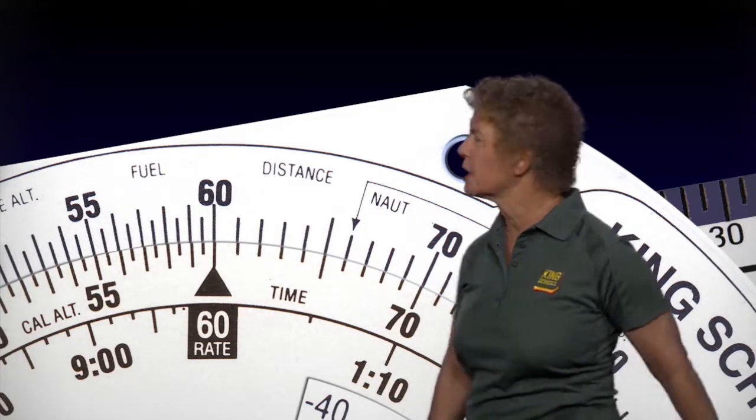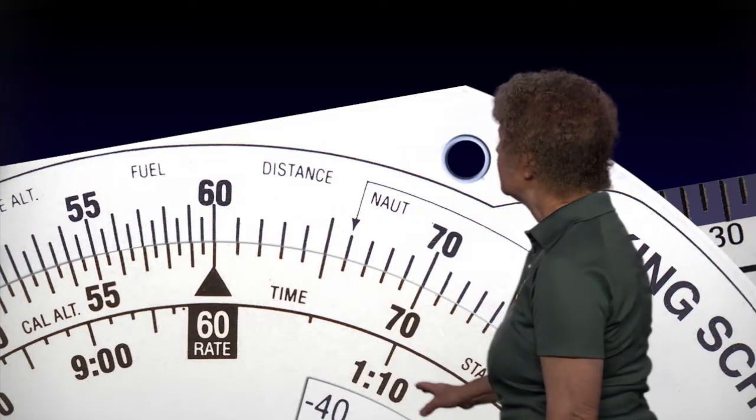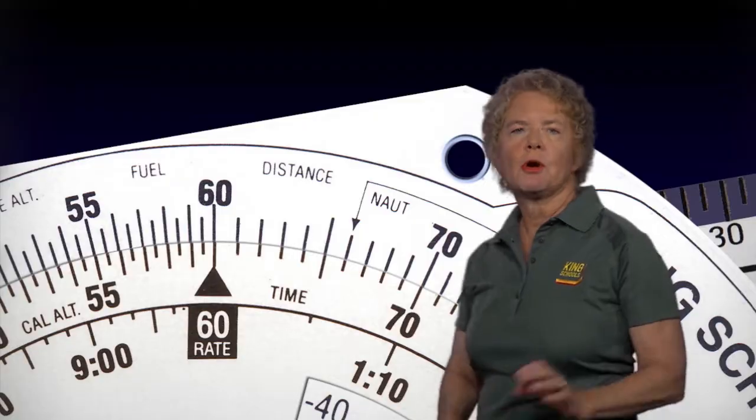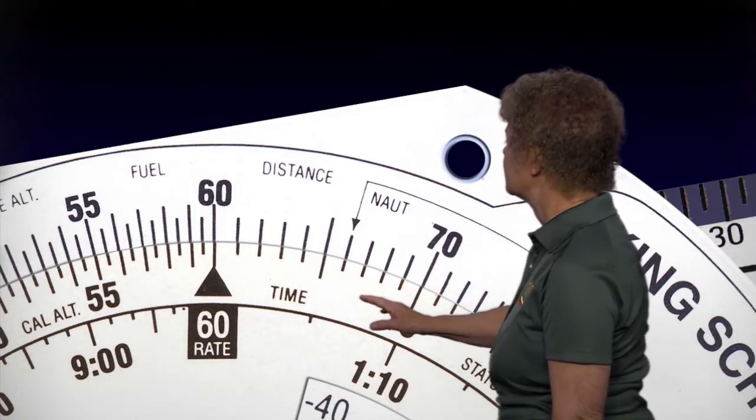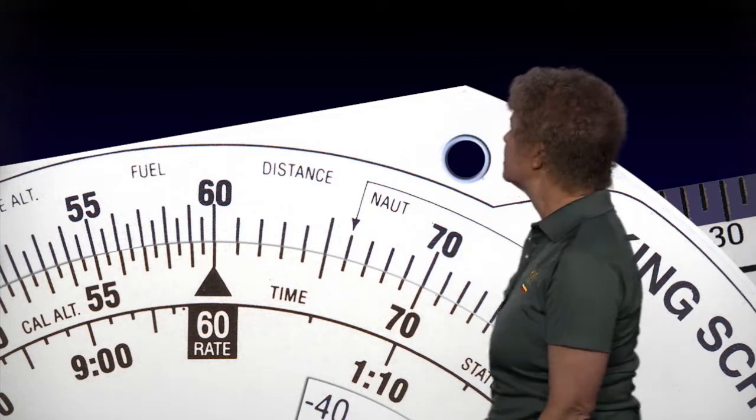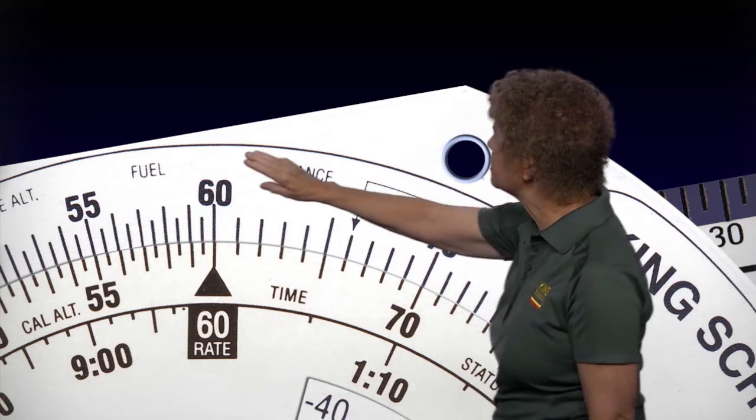And the very far inner scale, by the way, is going to be hours. So hours are on the far inner scale, minutes on the inner scale, but your distance or gallons is always going to be on the outside scale.